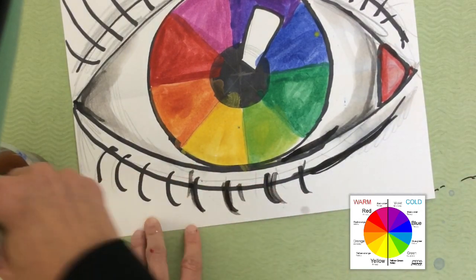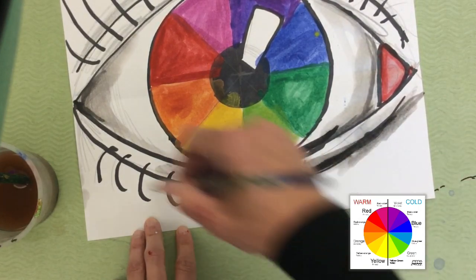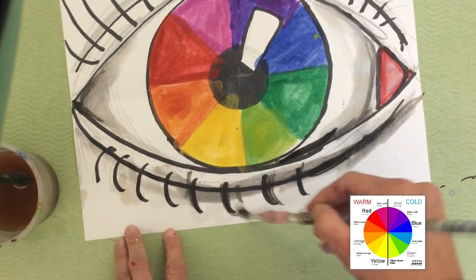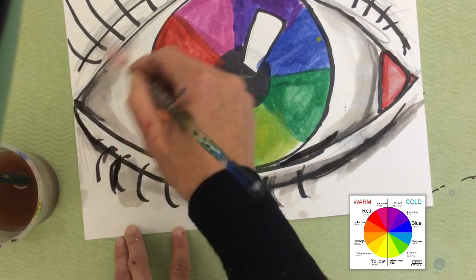So once I'm finished painting in all the values and all the colors, I'm going to write my name on my artwork, I'm going to put it on the drying rack, and my color wheel will be finished. So have fun making your eyeball color wheel, and I can't wait to see how awesome they turn out.